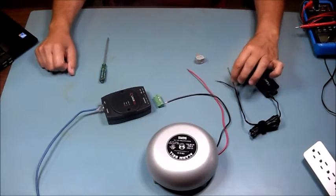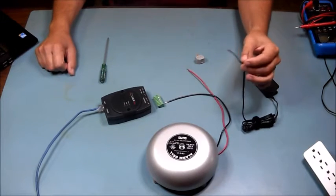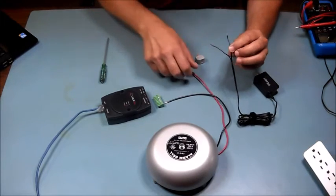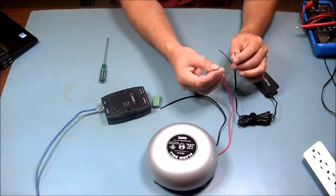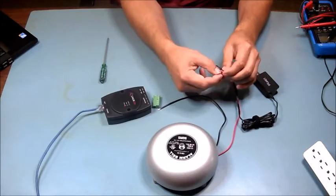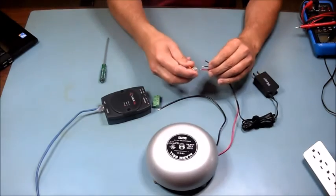First, we'll take the positive 12-volt power, take our red positive wire into the bell, and connect those two together.